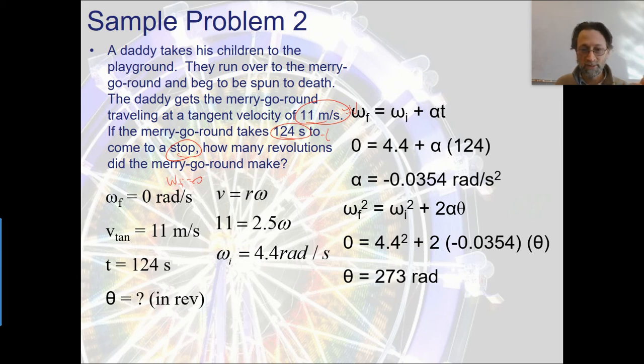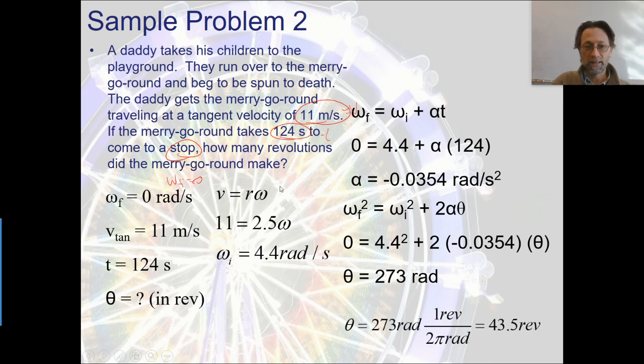And then the next would be to plug it into one of the other two kinematic equations to find theta. So I chose the squared ones. I have my final velocity is zero. My initial velocity 4.4 squared, two times that acceleration that we just found up there. And then we can solve for that and say that is 273 radians. Now, the interesting part about that is that's not what the question asked us for. We want to know what that is in revolutions. So remember, I'm going to have to do that dimensional analysis, radians per revolution. So I would divide by two pi in order to get that. And that's where I get 43.5 revolutions. So my kids are going to go around that circle 43 and a half times until the merry-go-round finally stops and they get off and probably hurl.